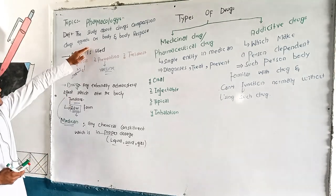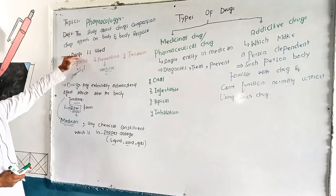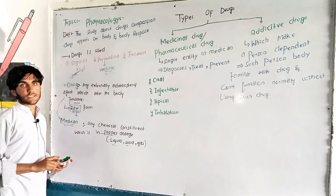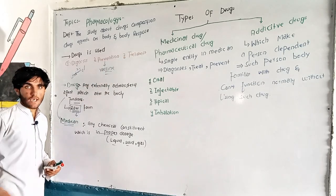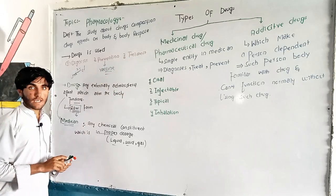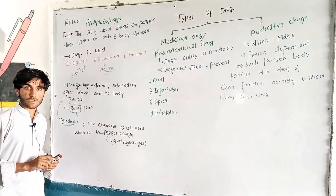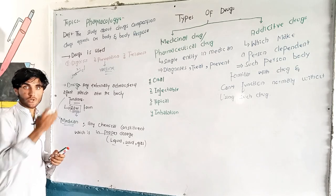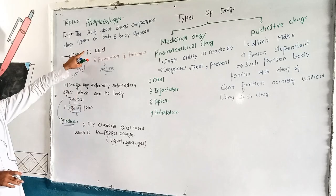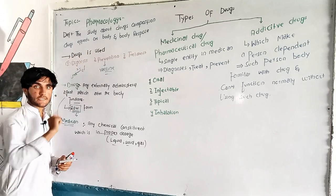The study of pharmacology covers drug composition, drug effects on the body, and also the body's response to drugs. We need to understand drug composition and drug effects on the body. The study of pharmacology is used to understand drugs and medicine.